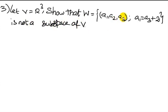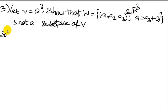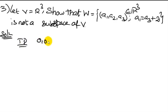To show W is not a subspace of V, we need to check the subspace conditions. First, we will prove that the zero vector (0, 0, 0) as an ordered triple is not in W. We will have to show that.